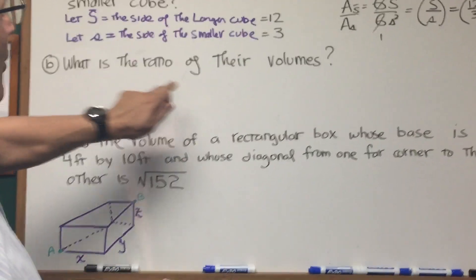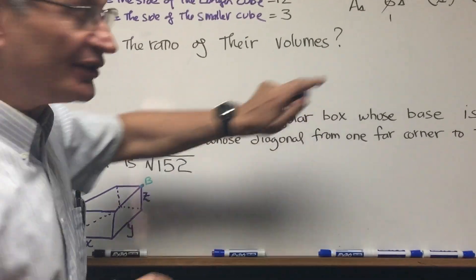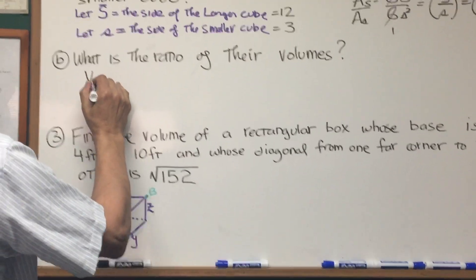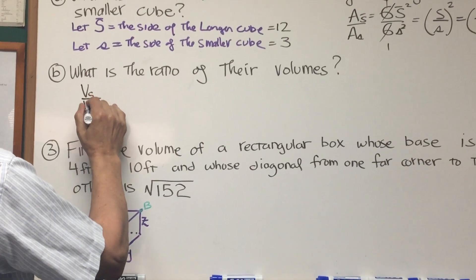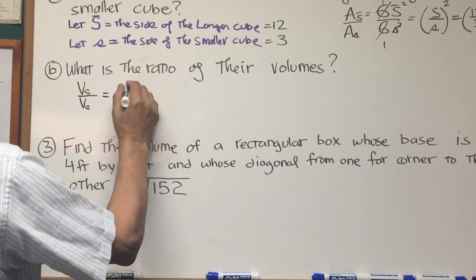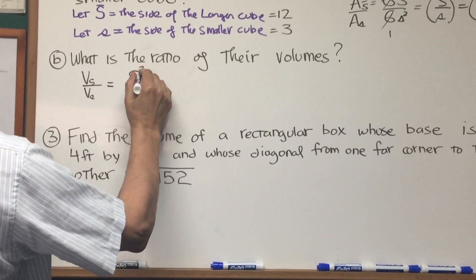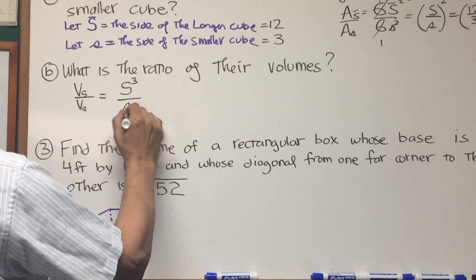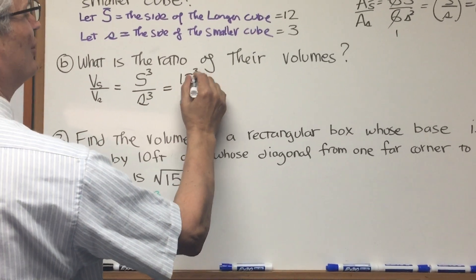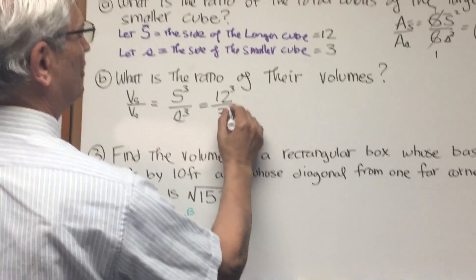Okay, part B. What is the ratio of their volumes? Okay, so we want the volume of the larger cube over the volume of the smaller cube. So the volume is going to be s cubed over s cubed. So it's going to be 12 cubed over 3 cubed.